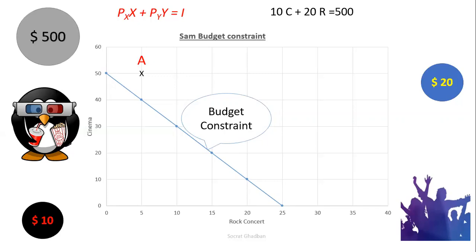Now also we have another point, point B. At point B, Sam can achieve this combination between going to the cinema or to the rock concert. So he goes 40 times to the cinema. So 40 times 10 is 400. And 5 times 20 is 100. So the total is 400 plus 100, it's 500. This is why it's achievable given the budget for Sam.